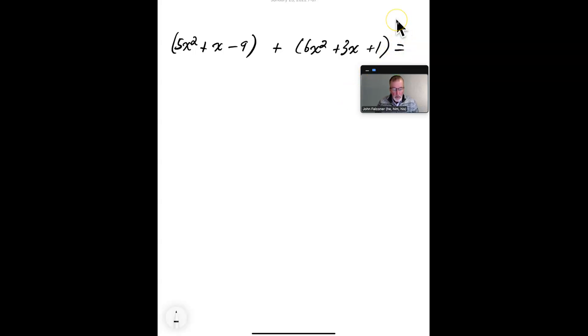So, first thing we're going to do is define what like terms, what that means. What's a like term? So, a like term is anything that has the same unit. So, here we have x squared, and over here we also have x squared. So, these are like terms, and they can be combined.